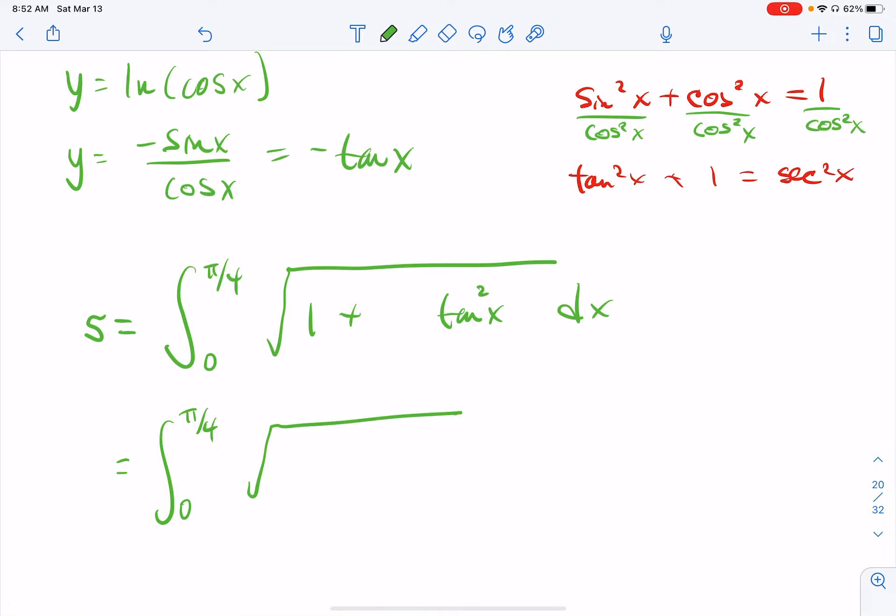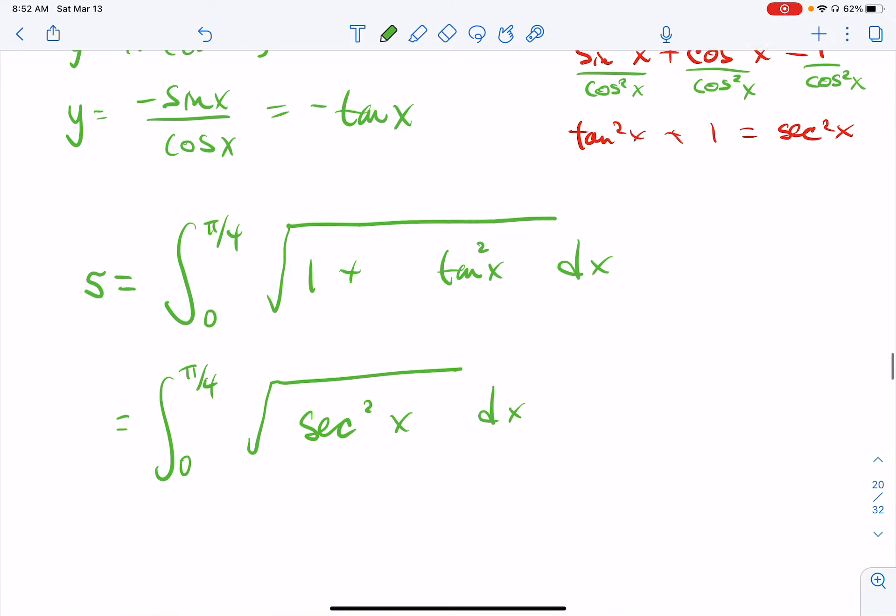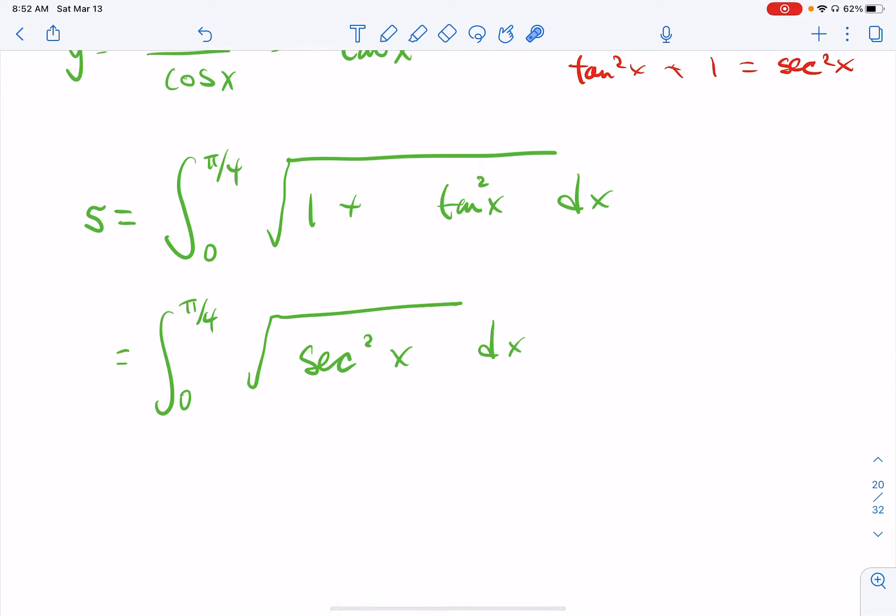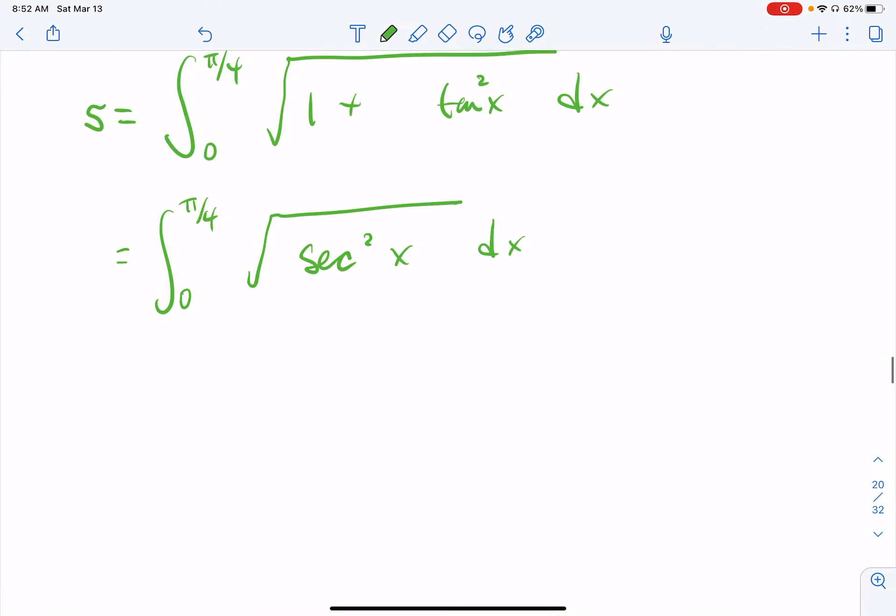Square root of secant squared x dx. So when I cancel these things out, it would technically be the absolute value. But over this interval, that secant is going to be positive, so we do not have to worry about it.